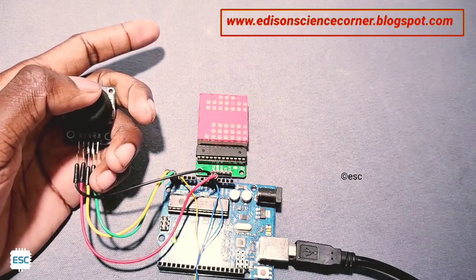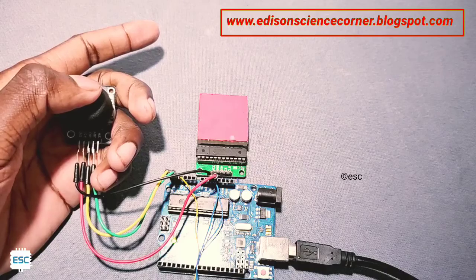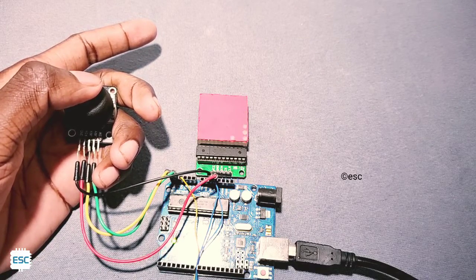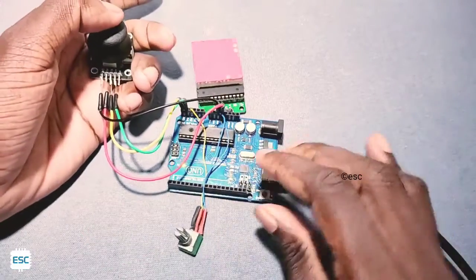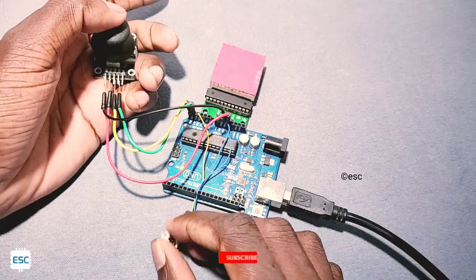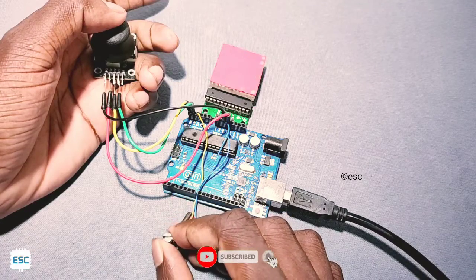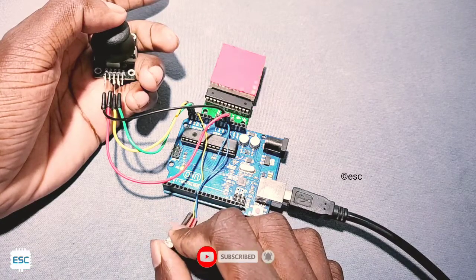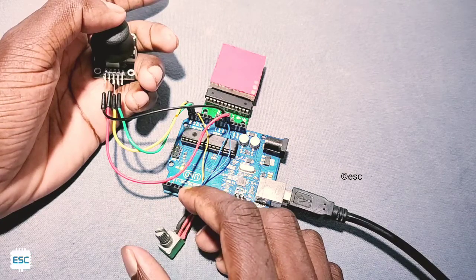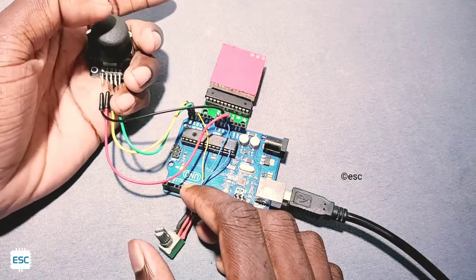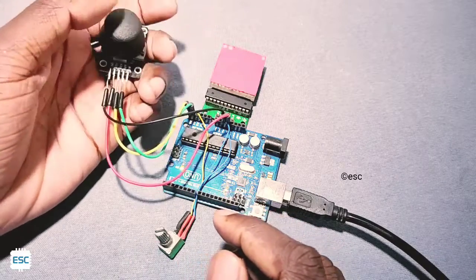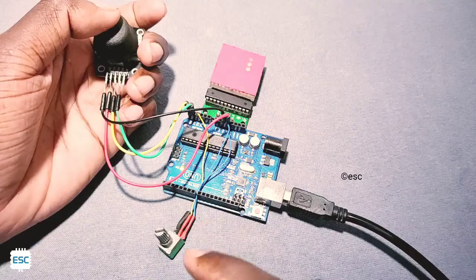After uploading, you can see the working. We can adjust the speed of the snake by using the variable resistor, and we can control the direction using the joystick. So everything is working perfectly.